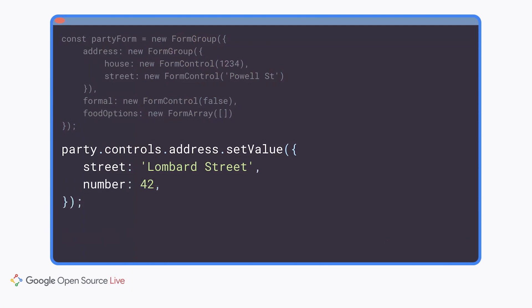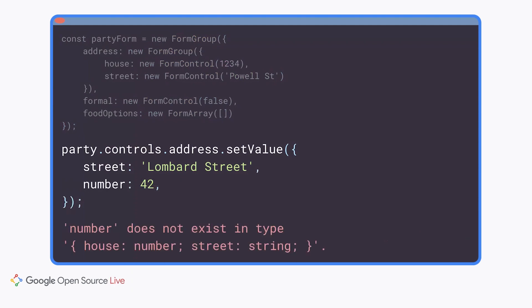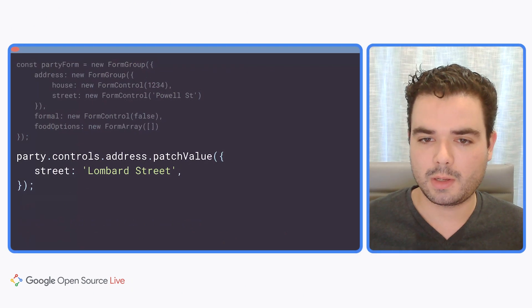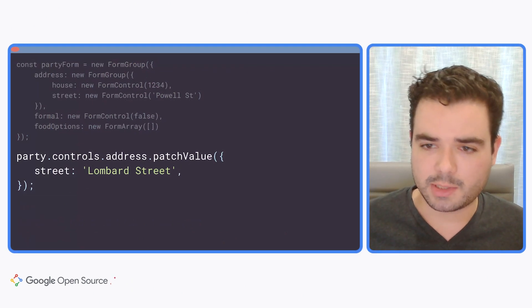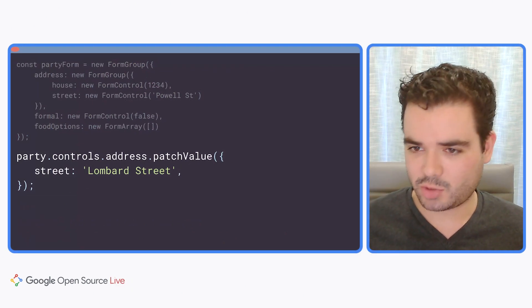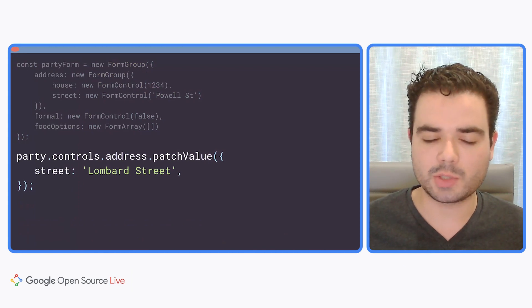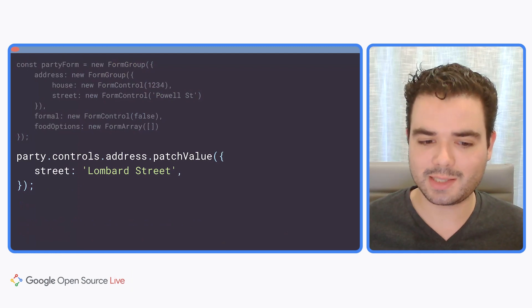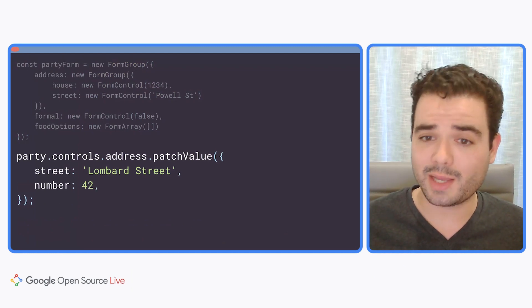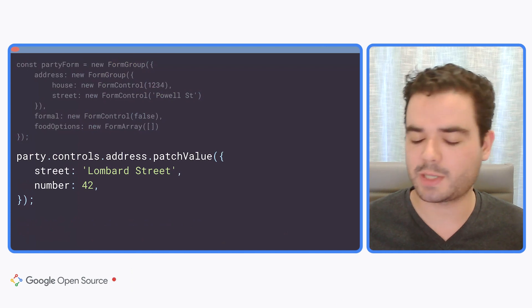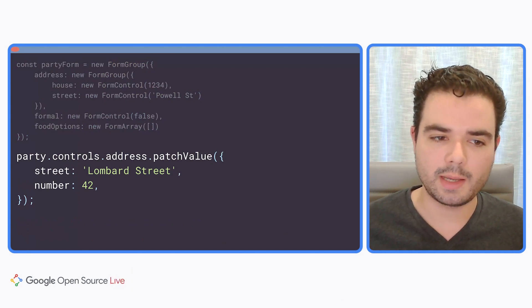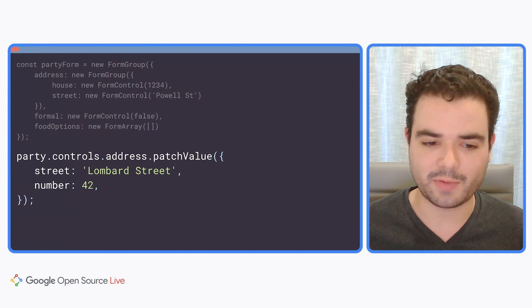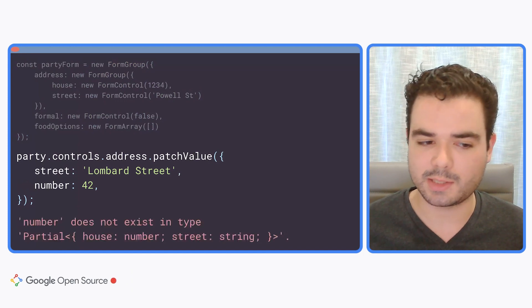If we've added a key but the name is incorrect, we again get a compile-time error — number does not exist on the expected object; instead it should be house. We could use .patchValue instead of .setValue, which relaxes the constraint a little bit — we can omit keys, and it will only replace the value for keys that we specify. However, specifying an unknown key still produces an error, because the types for .patchValue will check that we only specify valid keys.